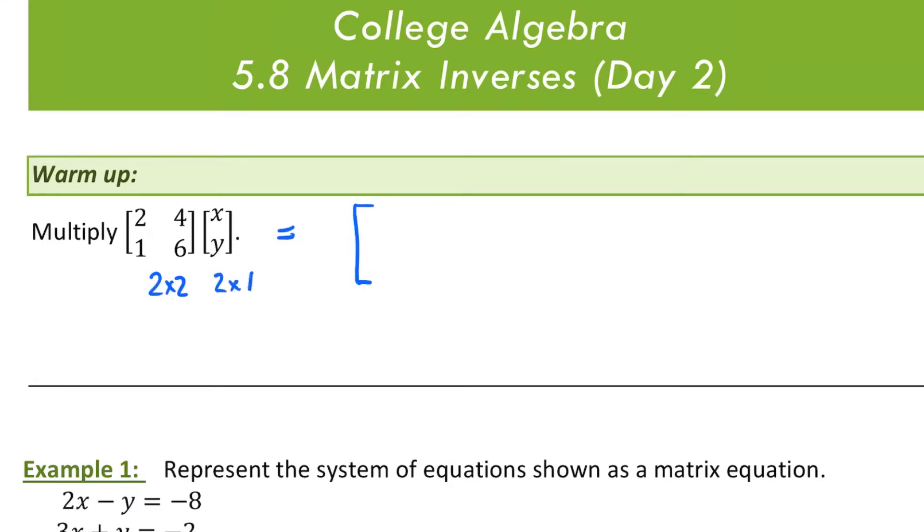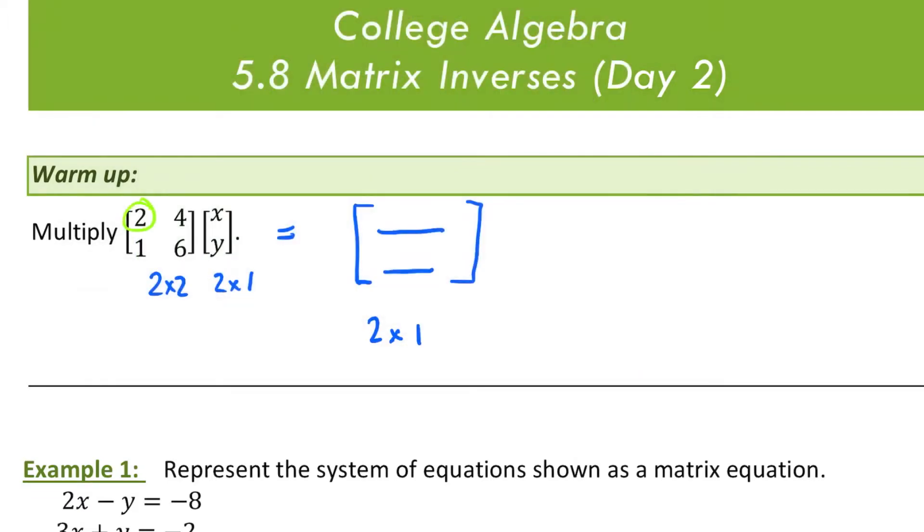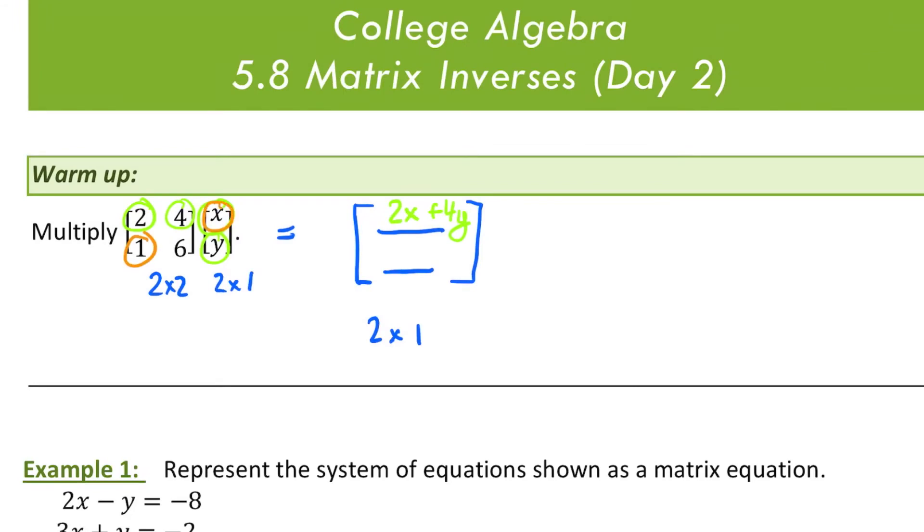If you're multiplying these two matrices together, I know one of them has variables in it, but that doesn't change your multiplication process. So you'll end up with a 2 by 1 matrix, and you'll be multiplying 2 times x, and then 4 times y, and adding them together to get your element in row 1, column 1. If you go to row 2, you'll have 1 times x plus 6 times y. So your matrix multiplication gives you this as a result.